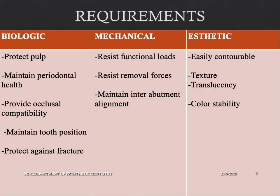Requirements of a provisional restoration fall under three categories: biologic requirements, mechanical requirements, and aesthetic requirements. Biologic requirements include protection of pulpal tissues, maintenance of periodontal health, providing occlusal compatibility, maintaining tooth position, and protecting the abutment tooth against fracture.